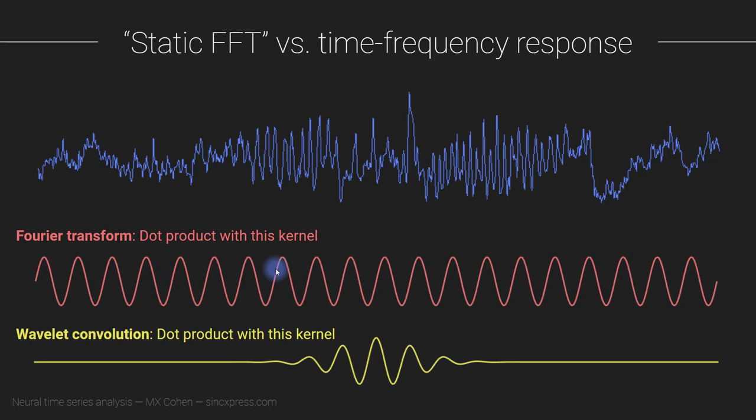So remember that the question was, how can we adapt this Fourier transform procedure so that instead of weighting all time points equally, we can focus the analysis on one specific time window, for example this time window or this time window.